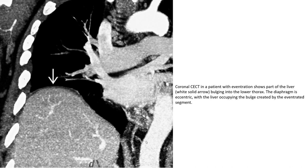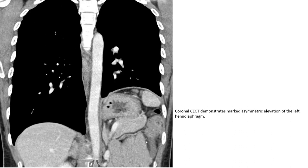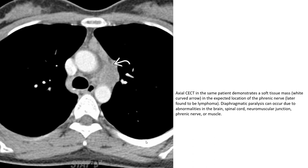Additional contrast-enhanced CT cases are shown demonstrating a wide bar in the right hemidiaphragm containing liver, representing a diaphragmatic eventration. Another case shows a soft tissue mass in the expected location of the phrenic nerve, later found to be a lipoma causing diaphragmatic paralysis.